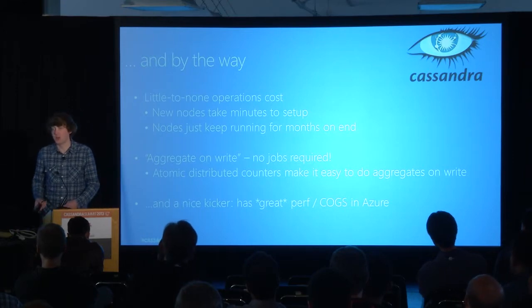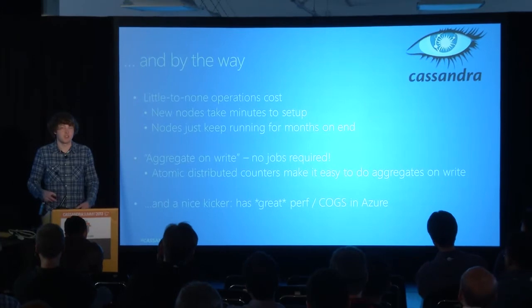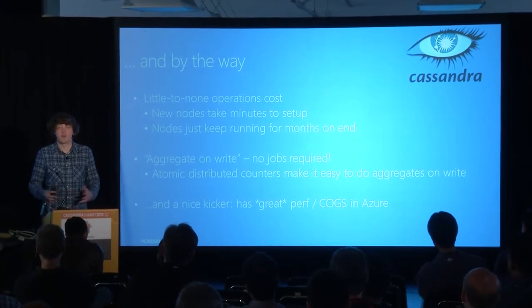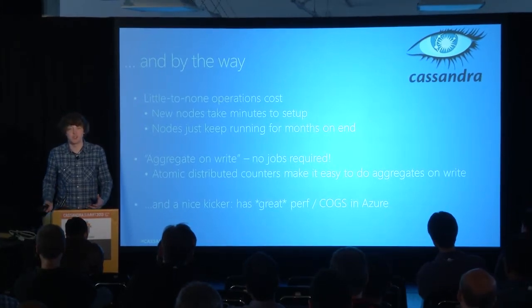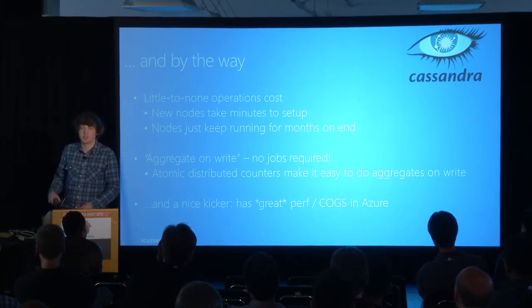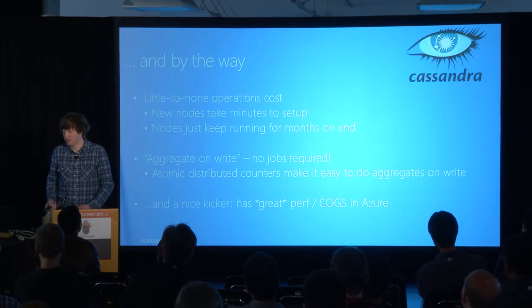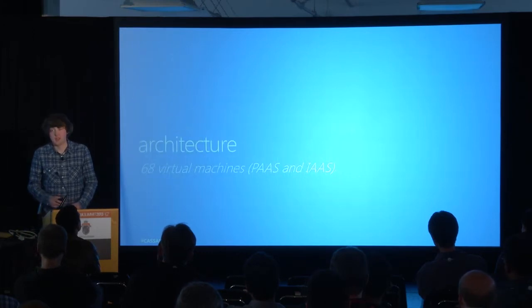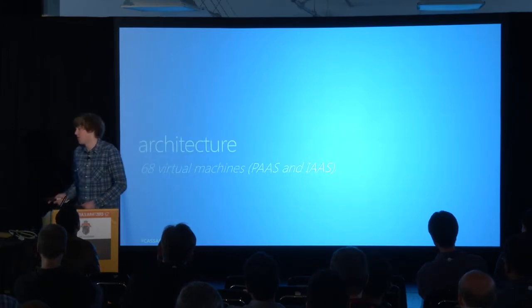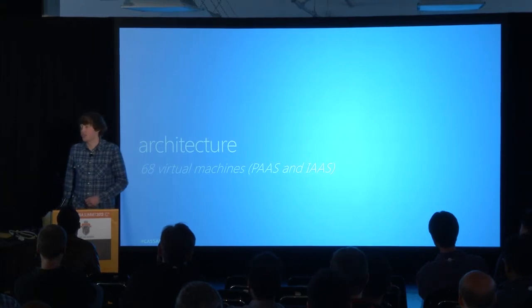Something that works out very well for us is that the cost of Cassandra on Azure is very good. You can run a 32-node cluster where each node has eight cores for a very reasonable price. The storage is just $0.08 a gig, so it doesn't really add up in terms of a bill.